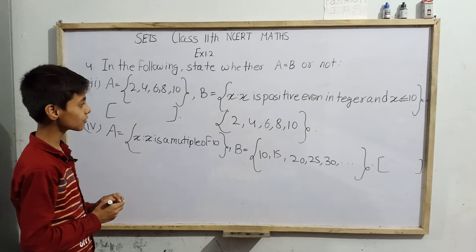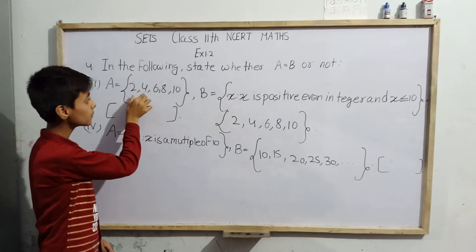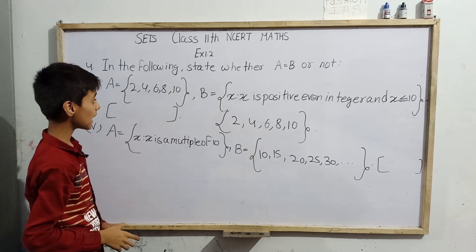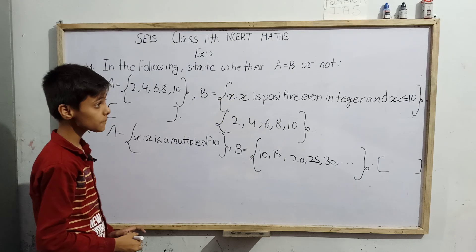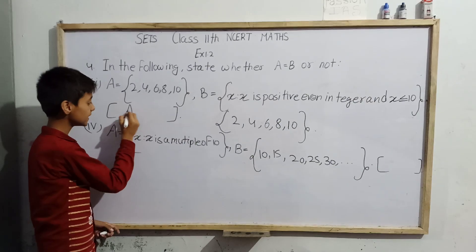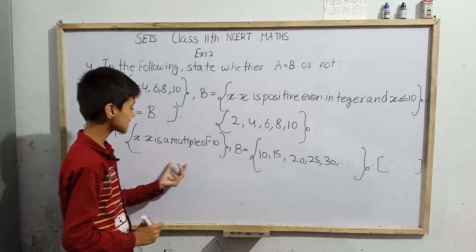If we compare, number of elements are 5 and 5, and all elements are same. So we can say that A equals B.